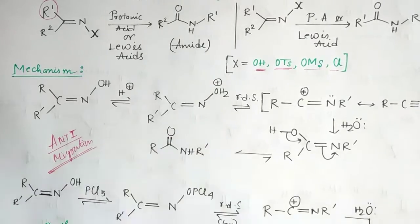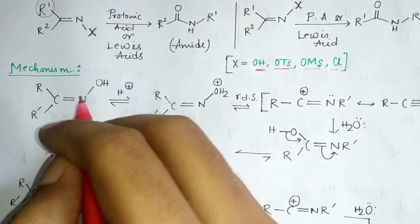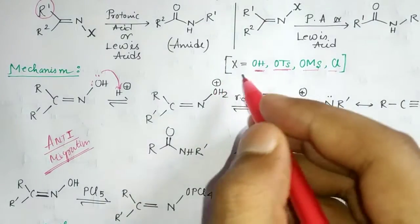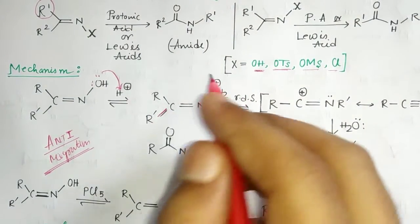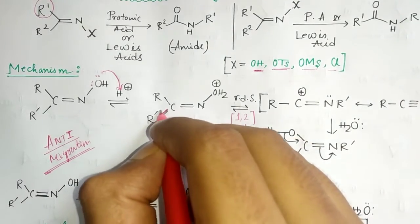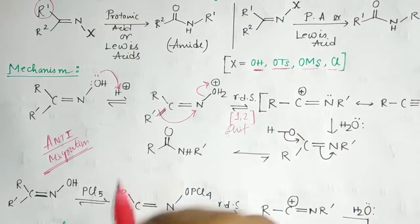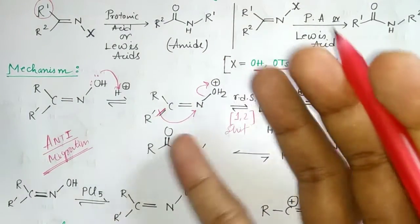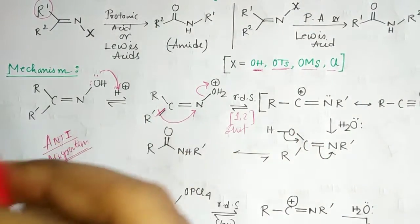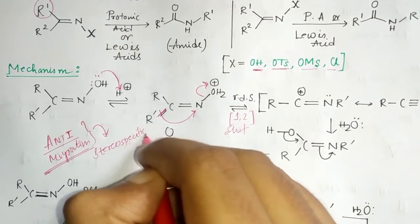With a protic acid H⁺ or H₂SO₄, the oxygen lone pair takes a proton to form OH₂⁺, and then rearrangement takes place via a 1,2-shift. The R group migrates and the leaving group departs, because it is now a good leaving group. This anti-migration is selective — the anti R group migrates, not the syn R group. That is why this reaction is highly stereospecific.